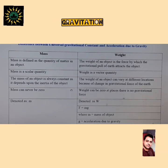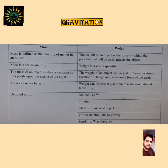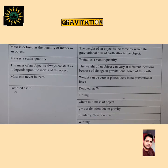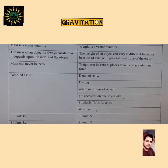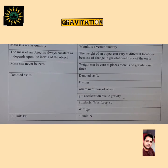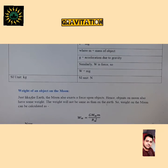Mass can never be zero as it signifies the quantity of matter in an object. Weight can be zero at places where there is no gravitational force — for example, at the center of the Earth where g = 0. Mass is denoted by small m, weight by W. The formula is W = mg, where m is the mass and g is the acceleration due to gravity. The unit of weight is Newton.